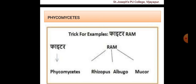Phycomycetes is called 'Phyco', and examples of this class can be remembered using the acronym RAM — R for Rhizopus, A for Albugo, M for Mucor. These examples all come under Phycomycetes, and commonly they are parasitic.